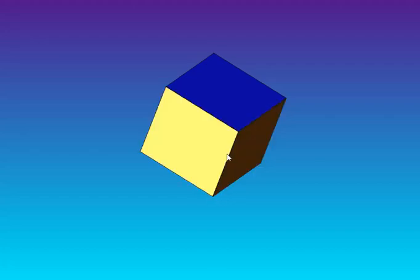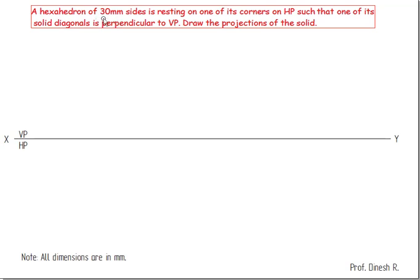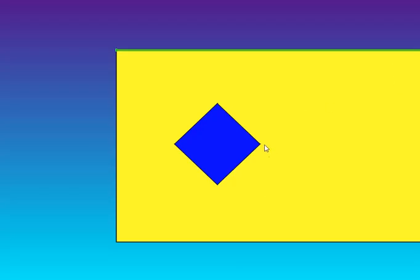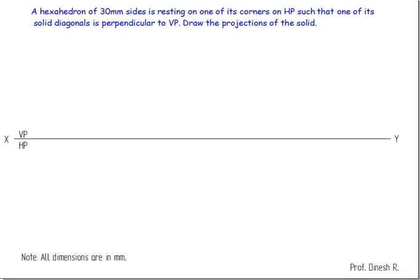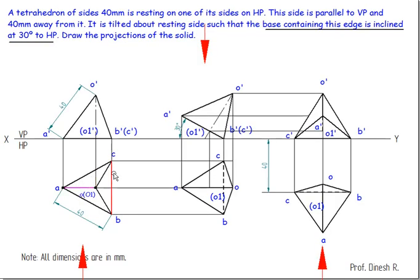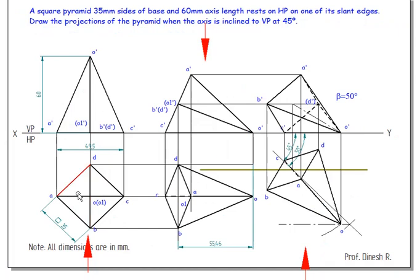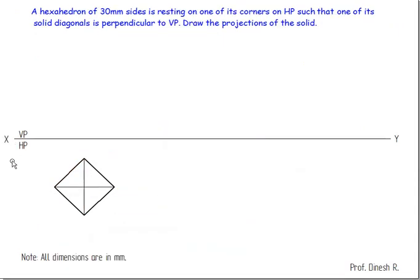In the hexahedron, height will not be given because by default all the sides measure 30mm. The next condition is resting it on one of its corners on HP. This is not like a tetrahedron, because in a tetrahedron all the edges are visible as slant edges — and even in the case of a pyramid, all the slanted edges are drawn in thick lines.